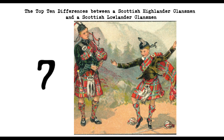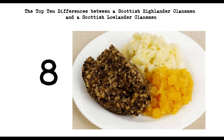8. Cuisine. Highlanders relied on simple, hearty fare, such as porridge, meat, and fish, while Lowlanders had more access to spices, fruits, and vegetables and developed more elaborate recipes.